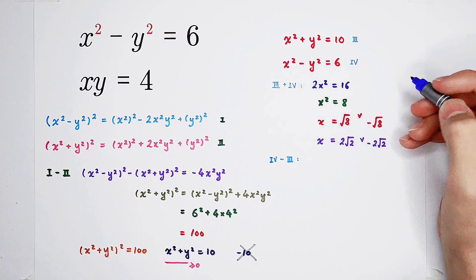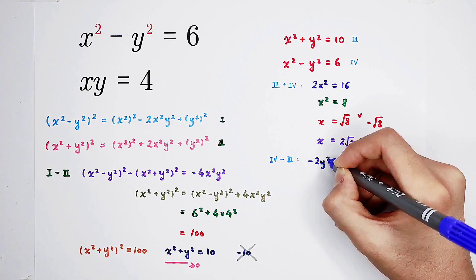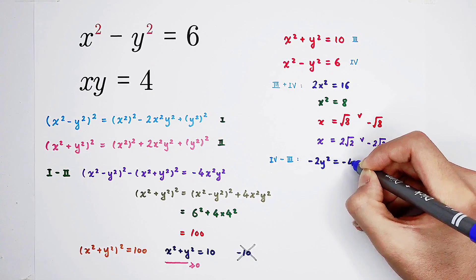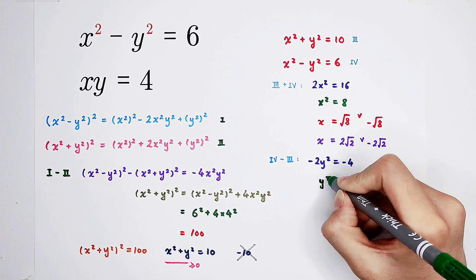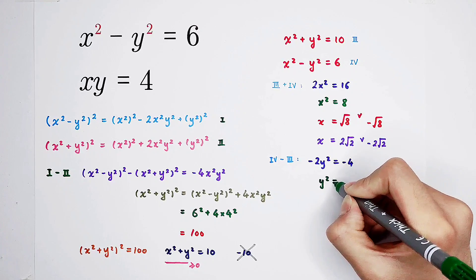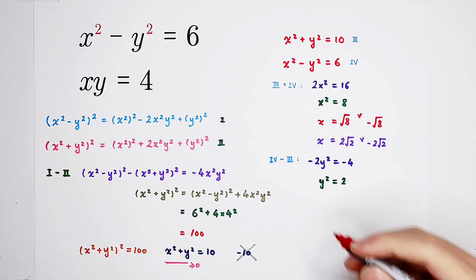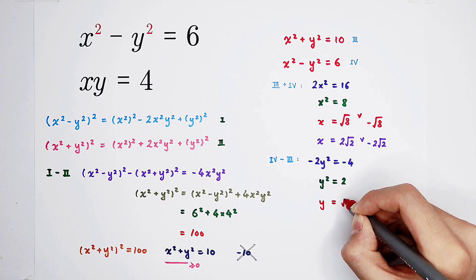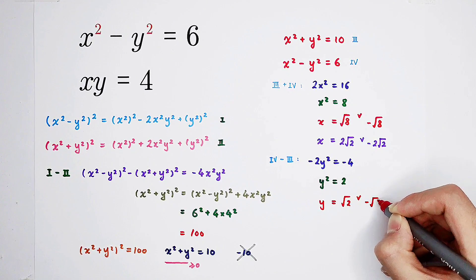In the same way, you can get negative 2 times y squared equals negative 4, so 2 times y squared is 4, and y squared is 2. That means y is square root of 2 or negative square root of 2.